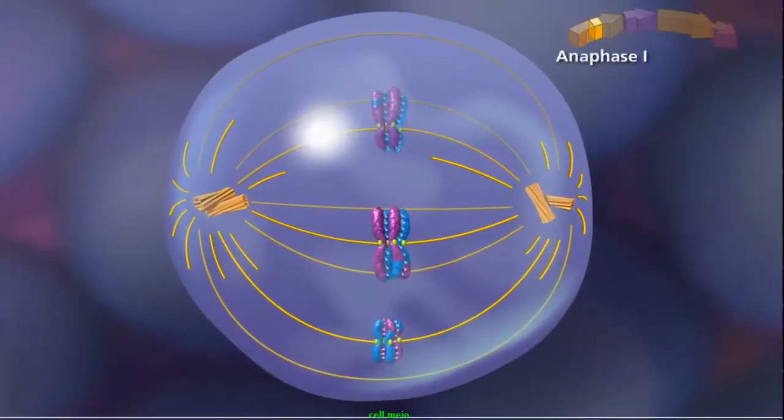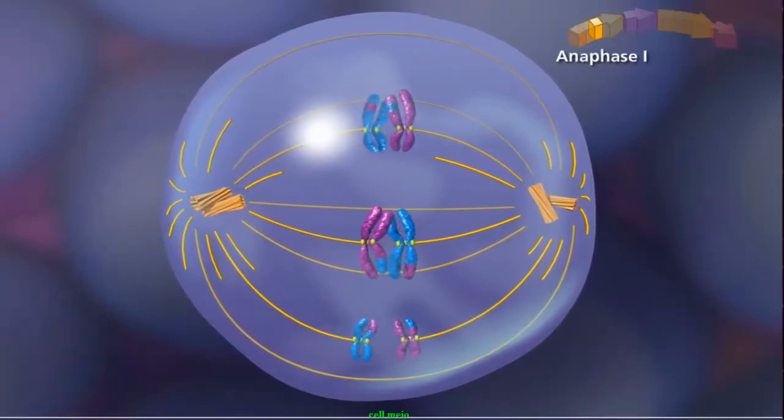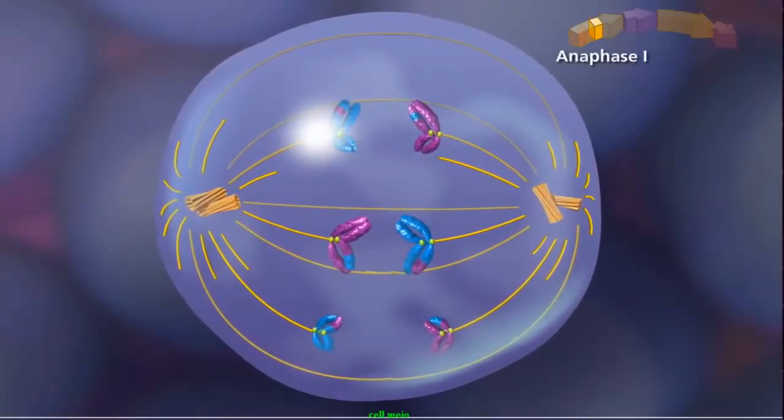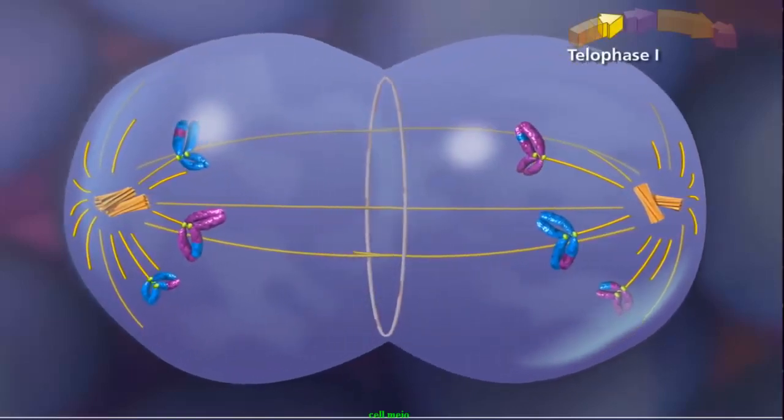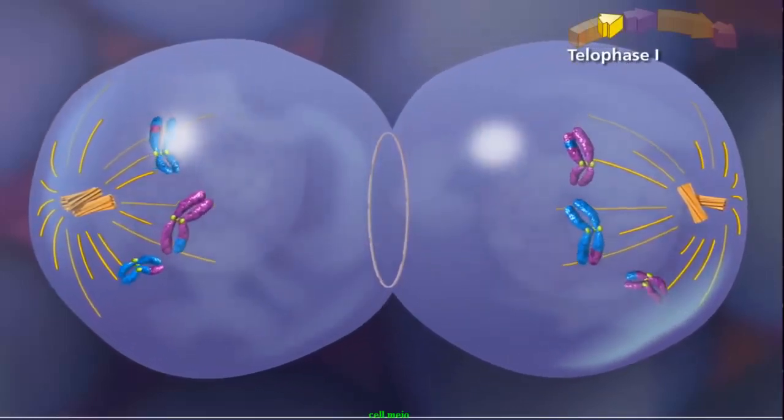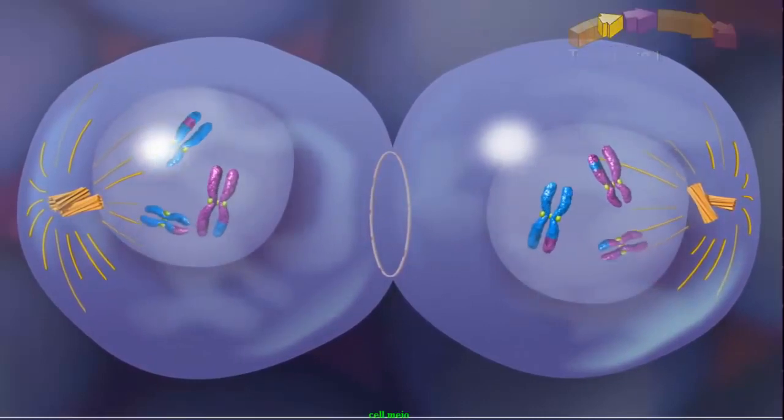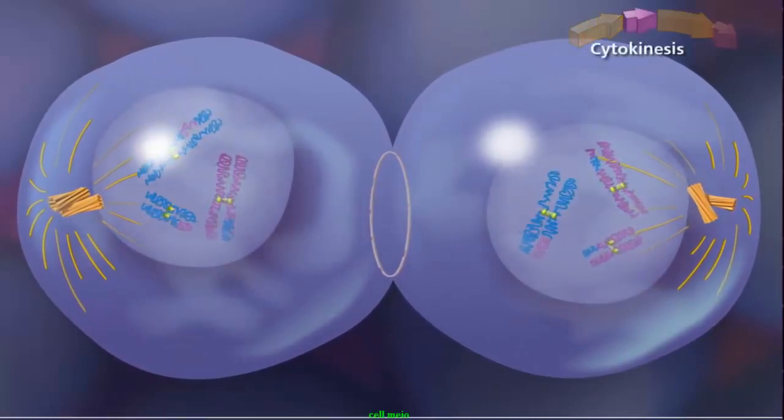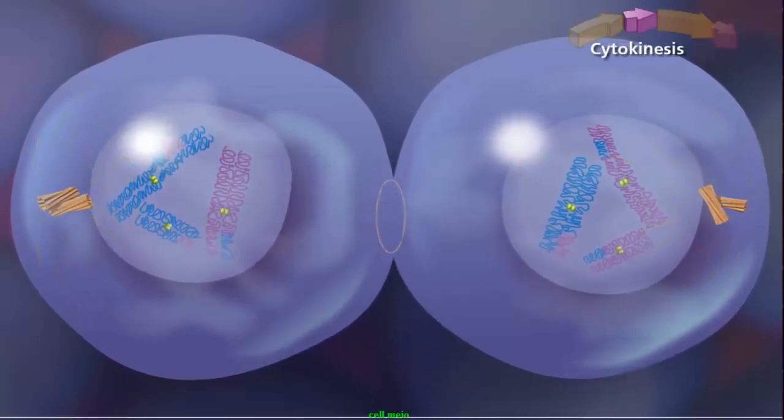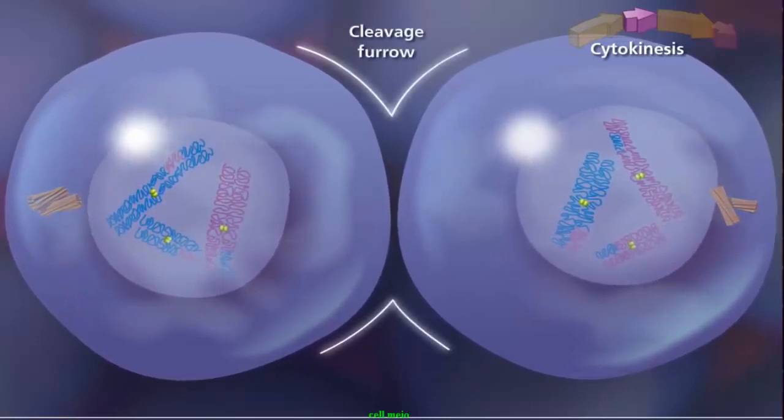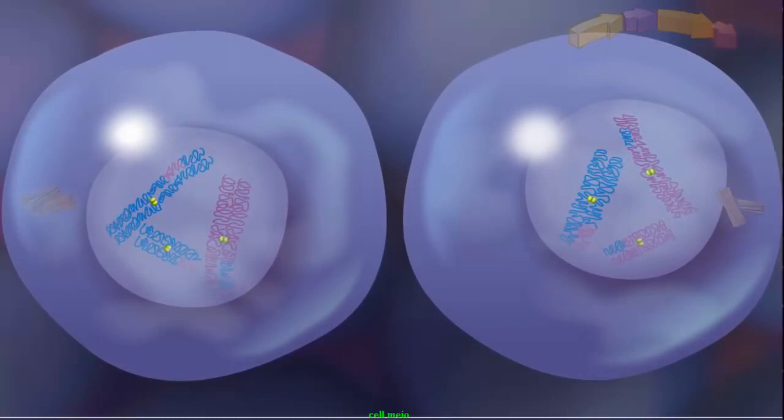In anaphase I, the homologous chromosomes separate and move toward opposite poles. Meiosis I ends with telophase I, when the chromosomes decondense and the nuclear envelope reforms. Cytokinesis separates the cytoplasmic material and the two daughter cells are separated by a cleavage furrow. Since the final product of meiosis I is two haploid cells,